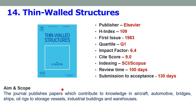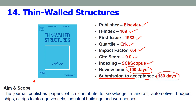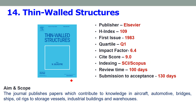Fourteenth is Thin-Walled Structures, published by Elsevier with an H-index of 109. The first issue was published in 1983. It is also a Quartile 1 journal with an impact factor of 6.4 and a site score of 9.0. Indexing is SCI. You will receive the first review comments within about 100 days and submission to acceptance is 130 days — within 4 months. You can publish papers related to aircraft, automotive, bridges, ships, oil and gas industries, vessels, industrial buildings, and warehouses — mainly focusing on composite or steel structures used in various engineering industries.